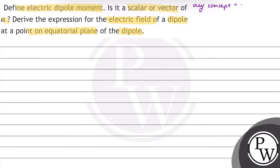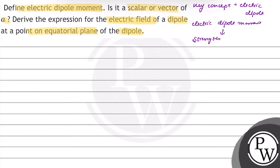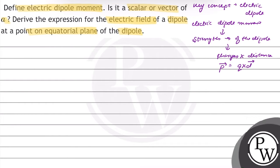The key concept is electric dipole. Electric dipole moment can be defined as the strength of the electric dipole, measured by the quantity of electric dipole moment. The magnitude is equal to the product of the magnitude of the charges and the distance between the two charges. So, electric dipole moment can be represented as P vector, which is equal to Q into D vector. Electric dipole moment is a vector quantity.